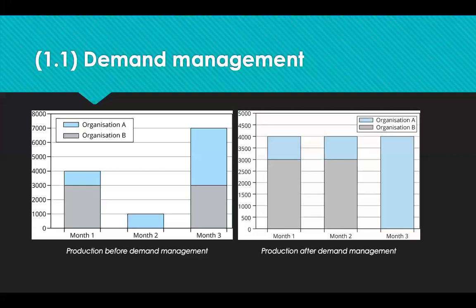Looking at the examples on screen: Organisation A requires a certain amount of goods over a three-month period, and Organisation B requires the same amount over the same period but distributed differently across months. The first graph shows what the supplier needs to produce each month in response to the orders. If a supplier works with both organisations to manage demand, they could smooth demand to produce the same amount each month and still meet both organisations' needs.